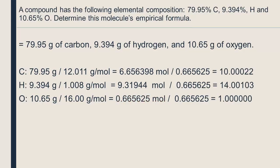The numbers aren't exact, but by rounding, we see that the ratio of carbon to hydrogen to oxygen is 10 to 14 to 1. The empirical formula is therefore C10H14O.